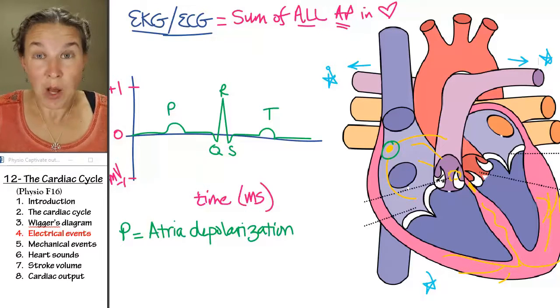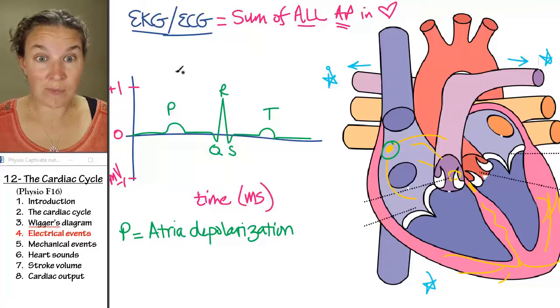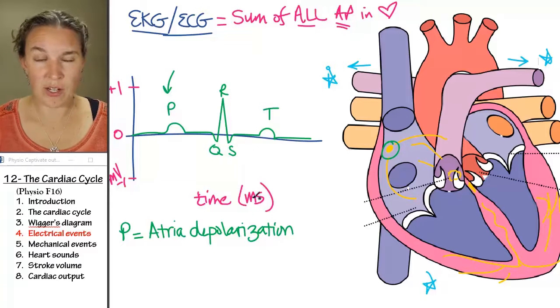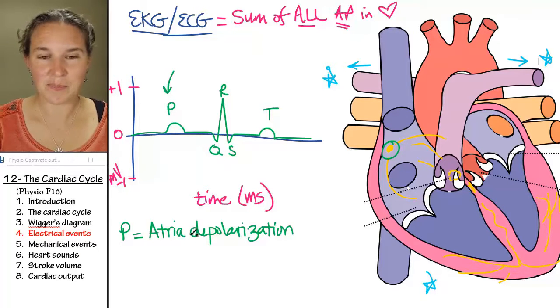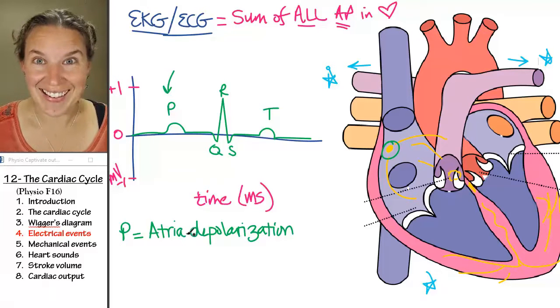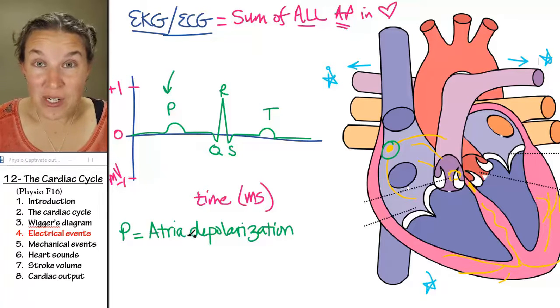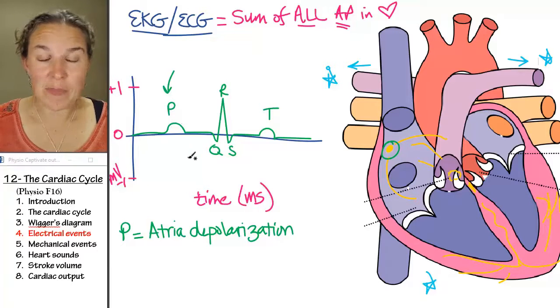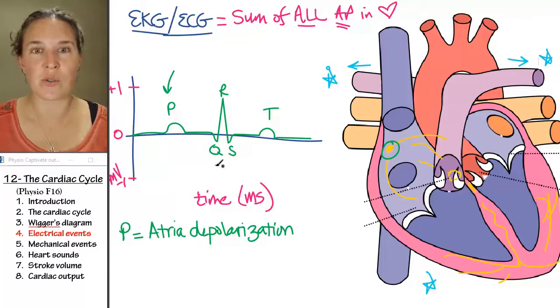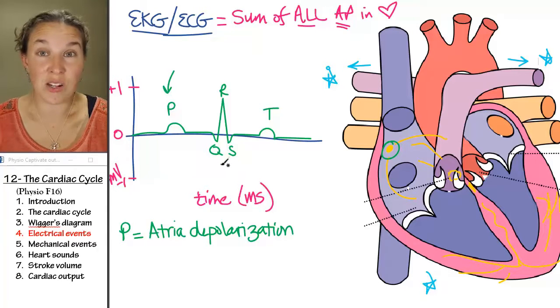When you add up all that atrial depolarization, that's what it looks like. Put it all together and you get this little tiny little bump. The funny thing is that it always looks like that. Whenever your atria depolarize, you get this little bump, unless you got problems going on, in which case we're going to use our EKGs to diagnose problems.